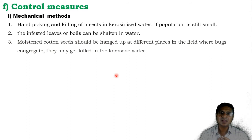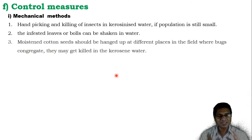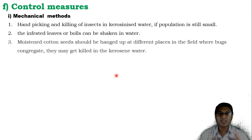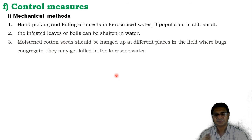For control, the first is the mechanical method: by simple hand picking and killing of the pest in kerosene water when the population is still small. The infected leaves or bolls can be shaken into kerosene water, which helps control the pest to a certain extent. Moistened cotton seeds should be hung at different places in the field where bugs congregate, and they may get killed in the kerosene water.